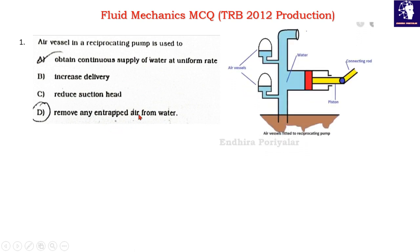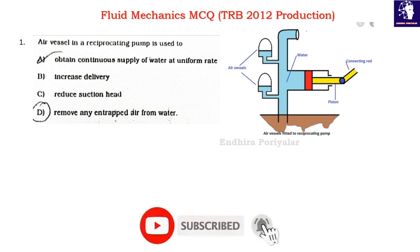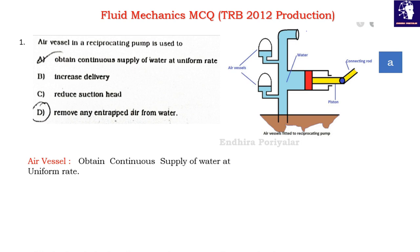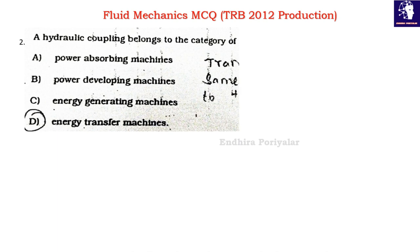In a reciprocating pump, the purpose of the air vessel is to obtain a continuous supply of water at a uniform rate. Option A is the correct answer.